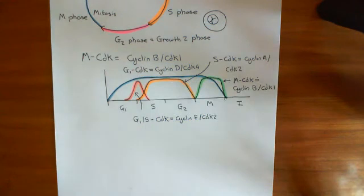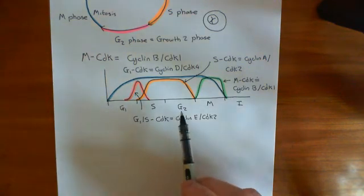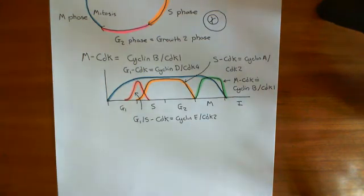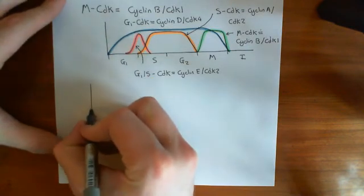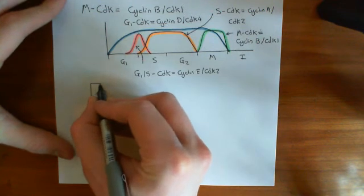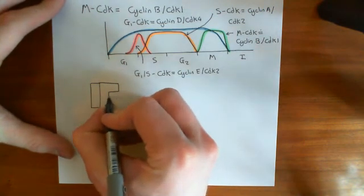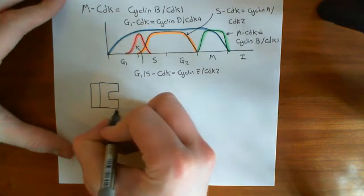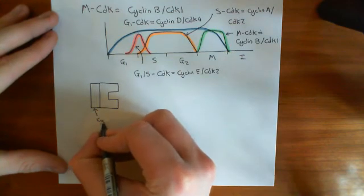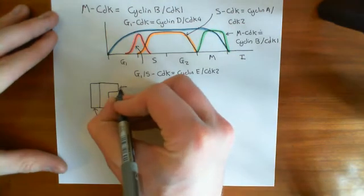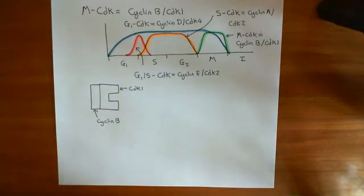We want to look at the processes which cause M CDK to rise in M phase — basically the cue to begin mitosis, since M CDK is responsible for causing most of the processes of mitosis. The first thing to consider is the structure of the cyclin-B CDK1 enzyme. It's not active when you just have cyclin-B bound to CDK1; that alone is not enough to actually activate the enzyme.